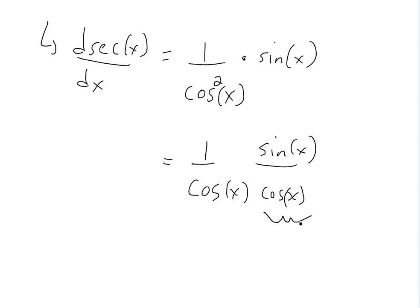And now this part right here, this is just tan x. The definition of tan x is just sine over cos x, and then this one here is, we're back to the beginning, secant of x.